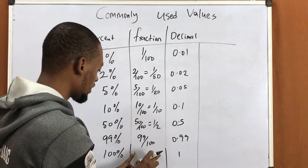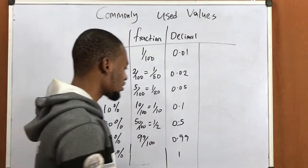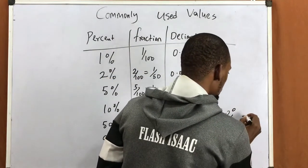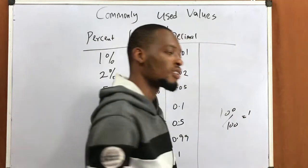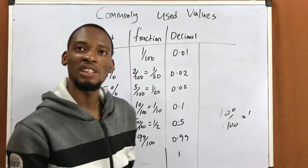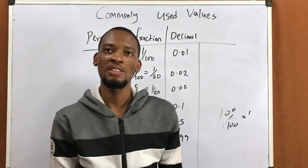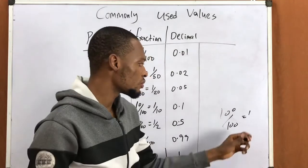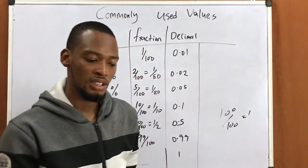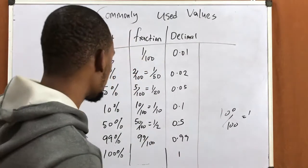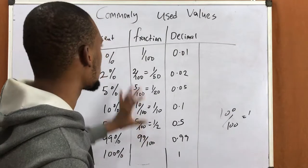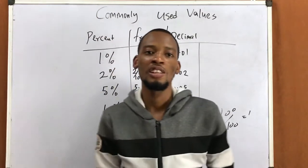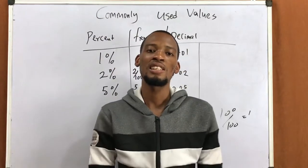And 100% equals 1 as a decimal. We don't put a fraction value because 100 over 100 equals 1 — so we can leave the fraction blank. That's the conversion. Thank you, and see you in the next class.